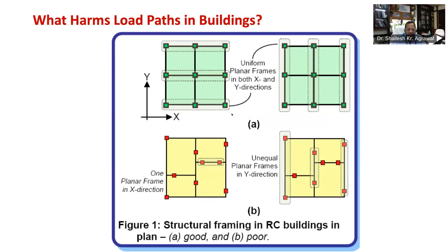Beams within each planar frame should be slender enough to deform in flexure. Concrete beams of very short span may damage in shear, which is undesirable. This is explained through figures 1A and 1B, which show two frame grids. For a smooth load transfer in a moment resisting frame, it is necessary for beams and columns to intersect and form a well-defined grid. Figure 1A shows a building with a regular frame in both plan directions, that is in X direction as well as in Y direction, while figure 1B shows a building with irregular beams and columns layout consisting of a small MRF in X direction.